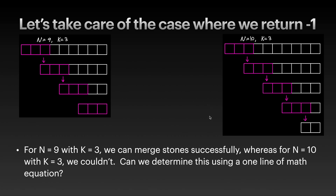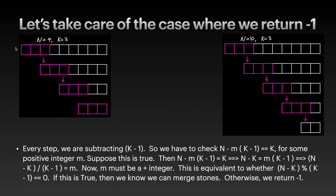Can we determine this using just one line of math? From the first step to the second step, you combine three stones but subtract only k minus one stones from the total count. From nine stones we go to seven, so each merge subtracts k minus one. The question is: how do we get from n stones down to k stones without running a loop?